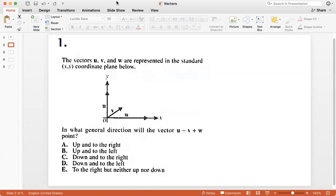Question one, the vectors u, v, and w, and you would notice that these are denoted by bold letters. So on the ACT, when you see a bold letter that indicates a vector, the vectors u, v, and w are represented in the standard coordinate plane.